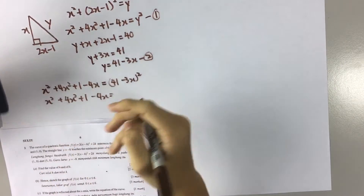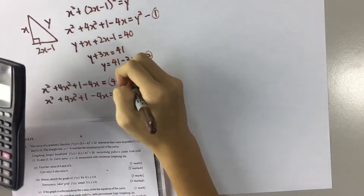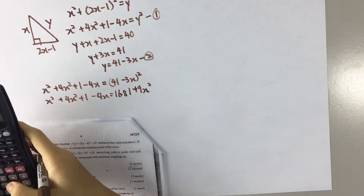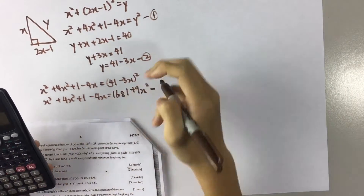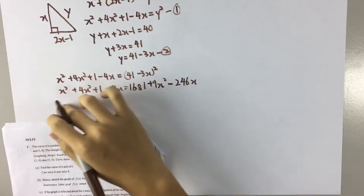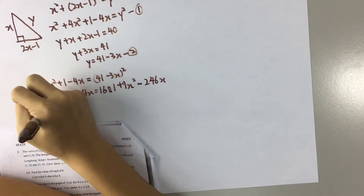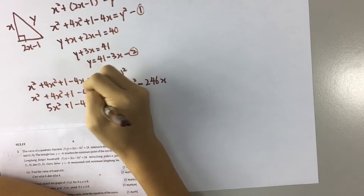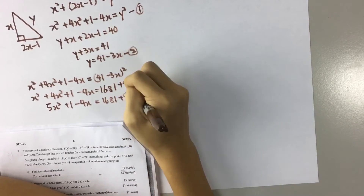We use the calculator. Expanding (41 minus 3x) squared gives 1681 plus 9x squared minus 246x. Combining like terms: x squared plus 4x squared plus 1 minus 4x equals 1681 plus 9x squared minus 246x. Simplifying this gives a quadratic equation equal to zero.